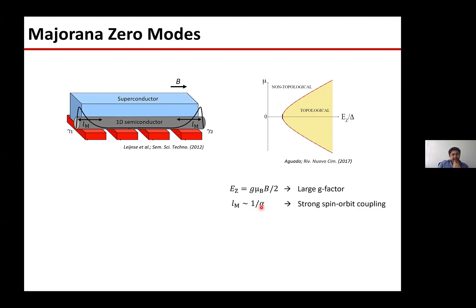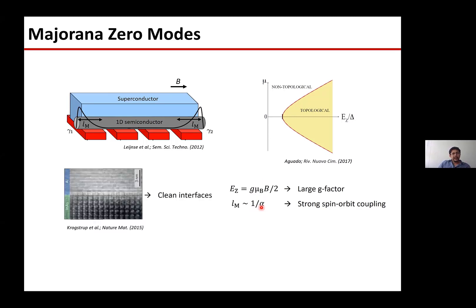Another important element is that over the years people have realized that the interface between the superconductor and semiconductor is very crucial - it's very important to have very clean interfaces between these two. This is an example of an interface between indium arsenide, a semiconductor, and aluminum. In this transmission electron microscopy image you can see that extremely clean interfaces between the two can indeed be made.